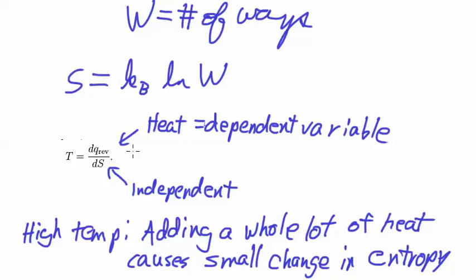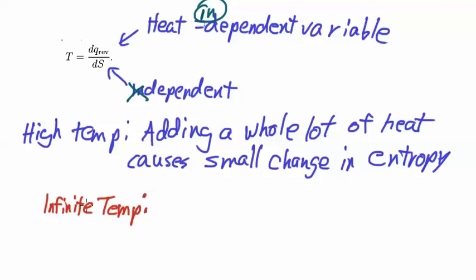But I need to change my mindset. So thinking about if this is a high temperature, then dQ is going to be much greater than dS. So adding a whole lot of heat causes a very small change in entropy. Usually in calculus, this would be the independent variable and this would be the dependent variable. But here we got it more like the heat is the independent variable. At a high temperature, adding a whole lot of heat causes a small change in entropy. At a low temperature, adding a little bit of heat will cause a large change in entropy.